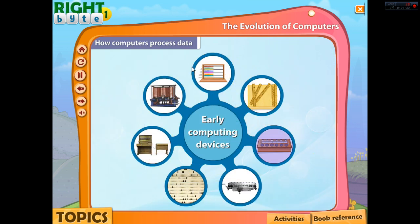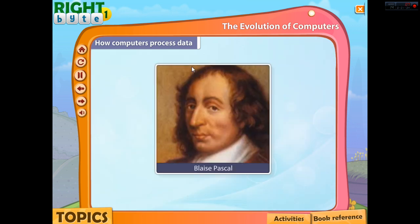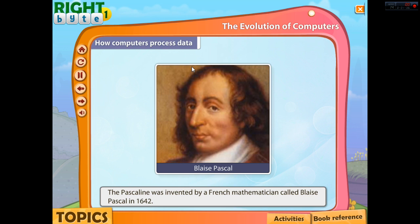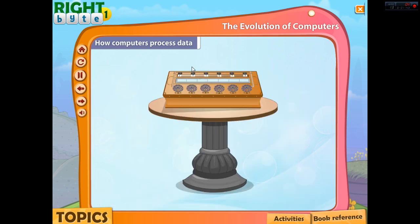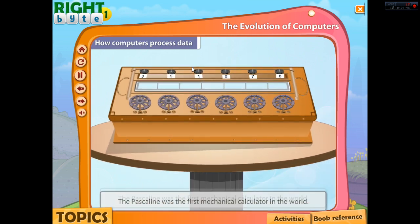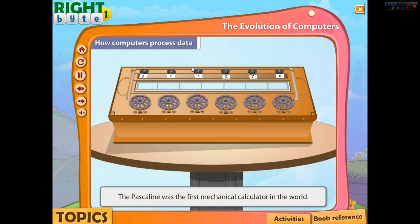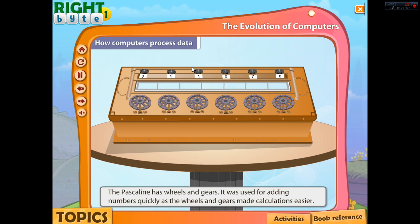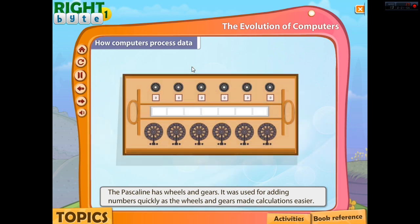The Pascaline. In 1642, the Pascaline was invented by French mathematician Blaise Pascal. The Pascaline was the first mechanical calculator in the world. It has wheels and gears and was used for adding numbers quickly, as the wheels and gears made calculations easier.